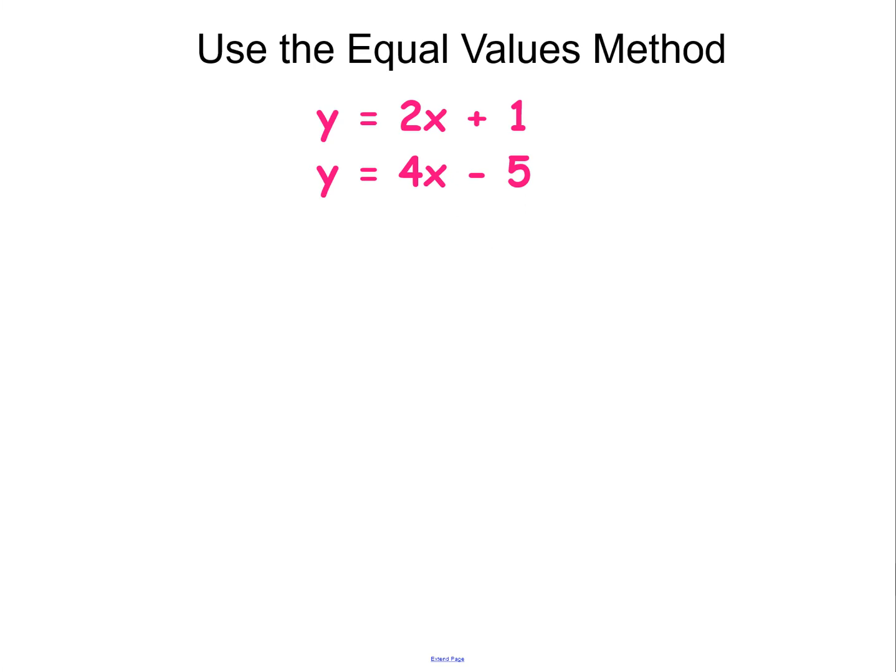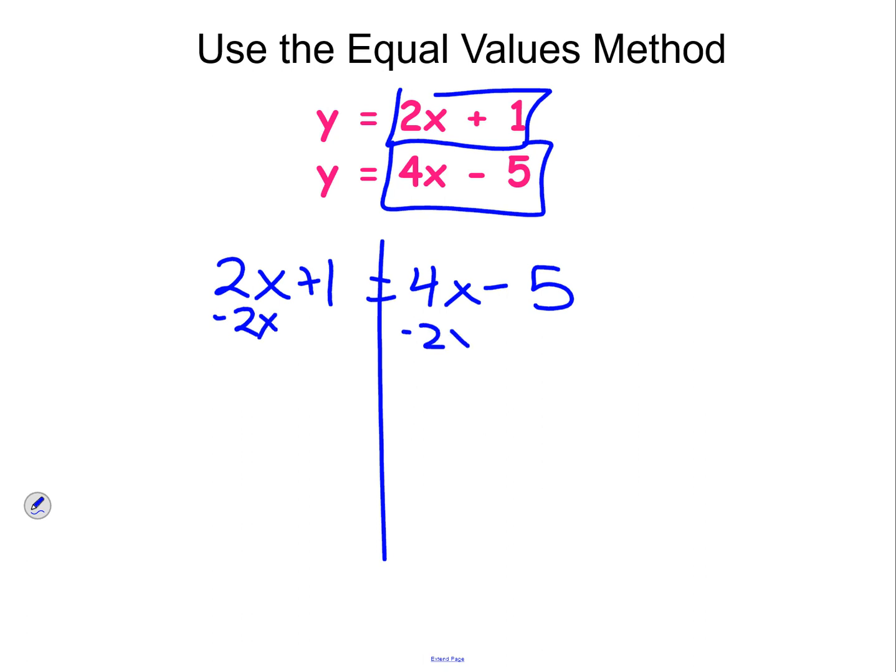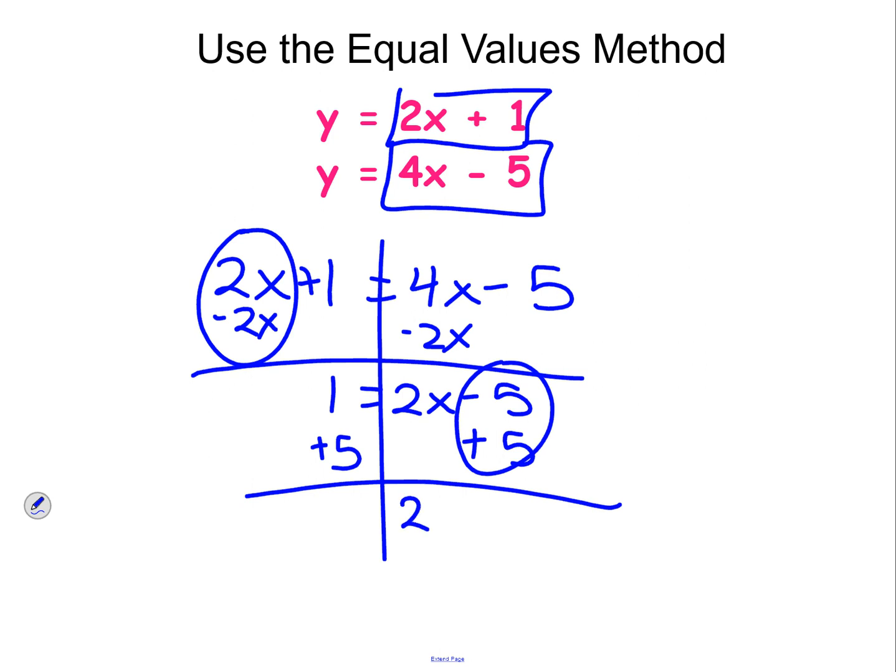Using the equal values method, remember the first step is we're going to take both of these, one goes on one side of the equal sign, one goes on the other side, and then I just solve it like an equation. I'm going to subtract 2x from both sides. That's going to equal 2x minus 5. I'm going to add 5 to both sides, and that's going to be 2x equals 6. So my x value is equal to 3.